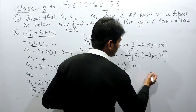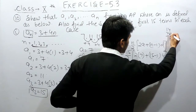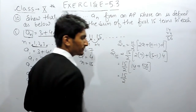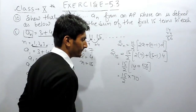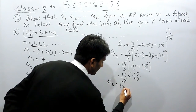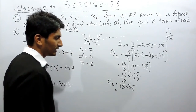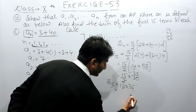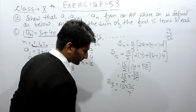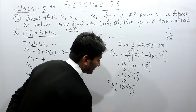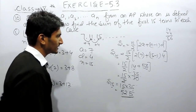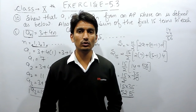Solving this: 14 into 4 equals 56. So this becomes 15 by 2 and 56 plus 14 is 70, giving 15 by 2 into 70, which equals 15 into 35. Multiplying 15 by 35: 15 into 5 is 75, carry 7; 15 into 3 is 45, plus 7 equals 52. So the sum of first 15 terms is 525. This is how you can solve this question.